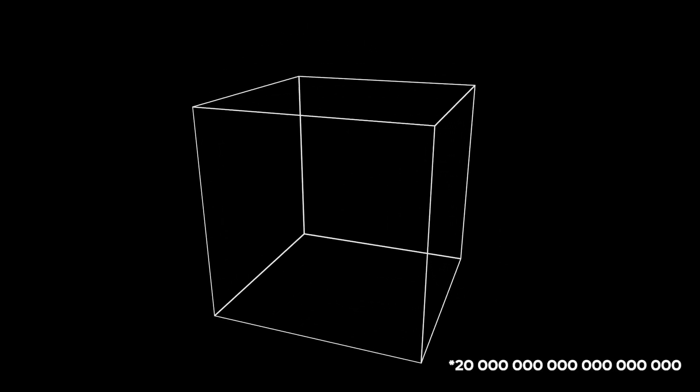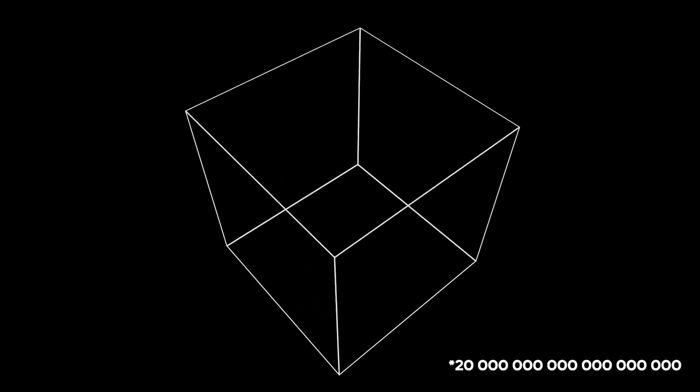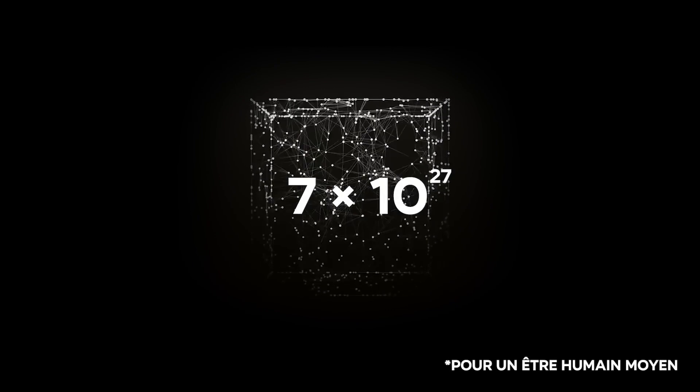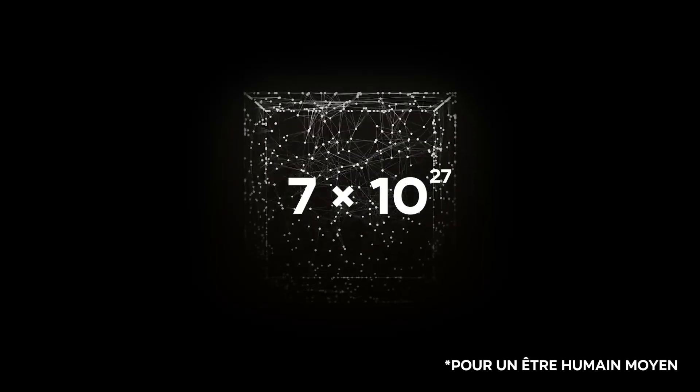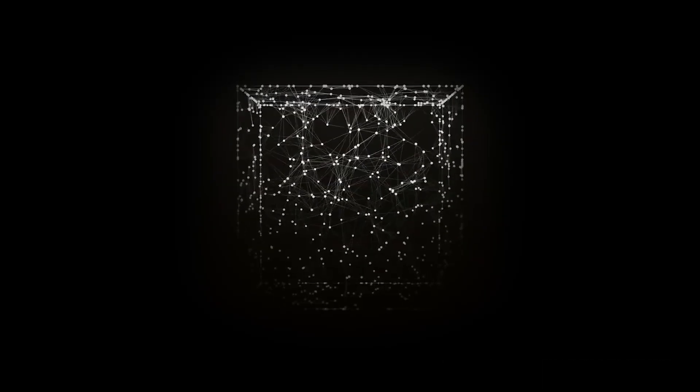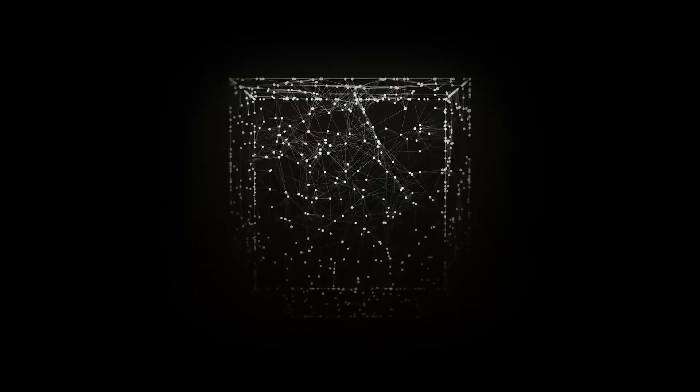A single cubic centimeter of air on earth contains 20 billion billion. You currently have about 7 times 10 to the 27th power inside you. These tiny things that make up all the matter around us, and in staggering quantities, are atoms.